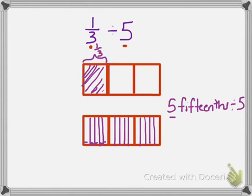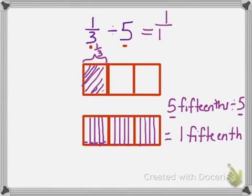5 fifteenths divided by 5 equals 1 fifteenth, so we know that 1 third divided by 5 equals 1 fifteenth.